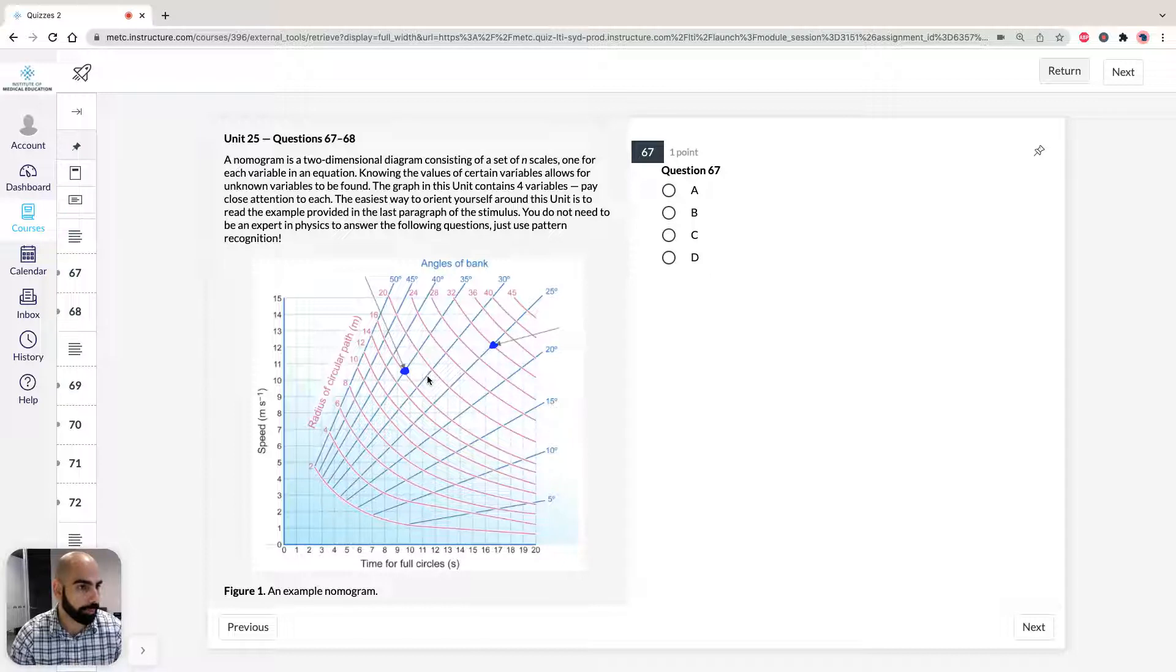And then it says, which of the following is the best estimate for the bird's speed in its new path? Now that we know our point here, we just have to draw the line to speed. So it's about 10 and a half in between 10 and 11. And the best option there in 67 is 10 meters per second. So therefore, the answer for 67 is going to be D. So straightforward.